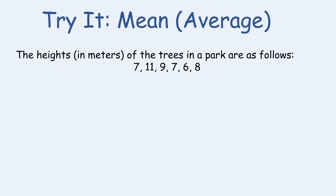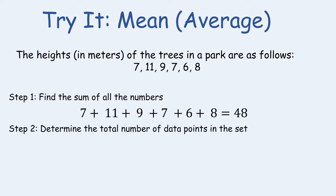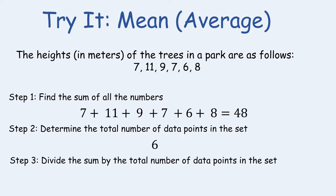Let's try and find the average. The heights in meters of the trees in a park are: seven, eleven, nine, seven, six, and eight. The first step is to find the sum of all the numbers — sum means to add. Seven plus eleven plus nine plus seven plus six plus eight gives a sum of 48. The second step is to determine the total number of data points: there are six data points, in this case six trees. The last step is to divide 48 by six, which equals eight. The average height of the trees in the park is eight meters.